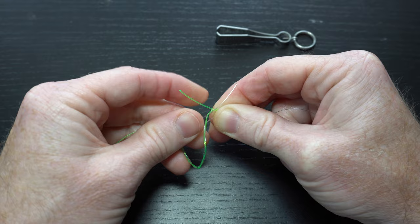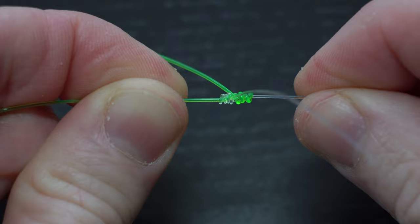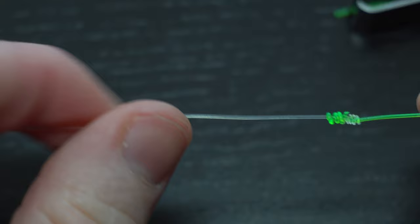Now wet the knot with some saliva and then pull the leader and tippet tight to seat the knot. Now this is a little difficult on such a thick line, and I'll show you what it looks like in a minute on a regular sized line. Once seated, then clip off the tag ends close and you can see here how thin this knot is.